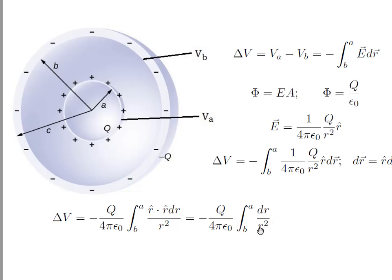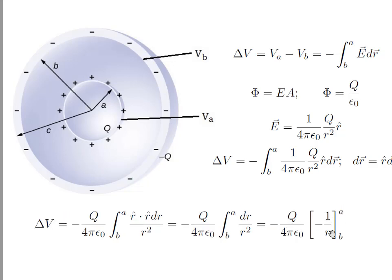The integral of dr over r squared equals minus 1 over r, from b to a. So if I substitute r by a and b...